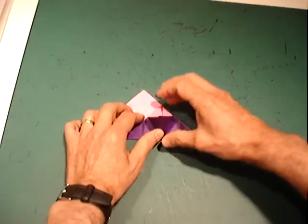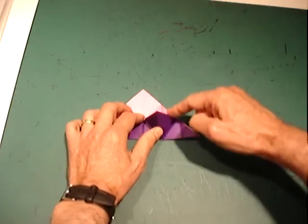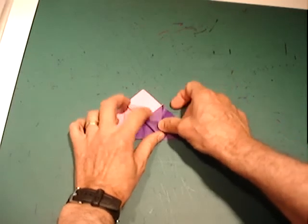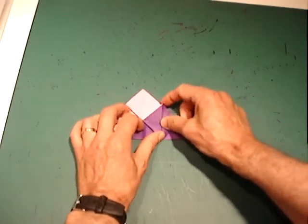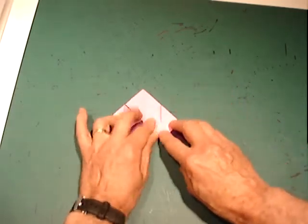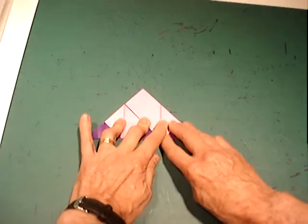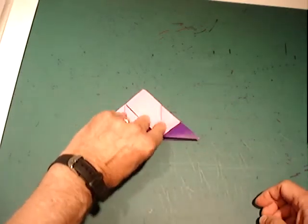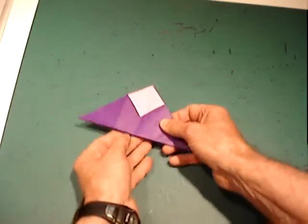Fold down the tip exposing another face. Stick in a finger with a single edge along the right hand side. Squash flat. Fold down the tip exposing another face. Repeat on the other side.